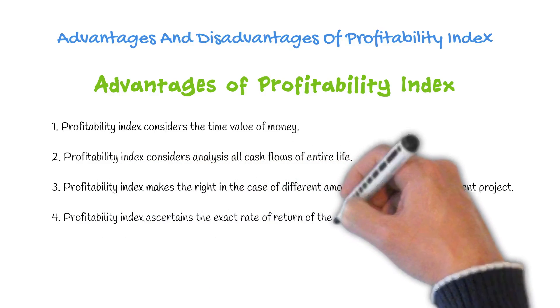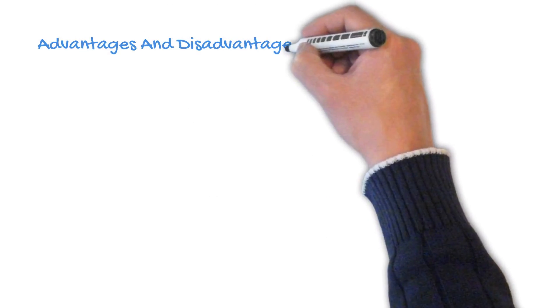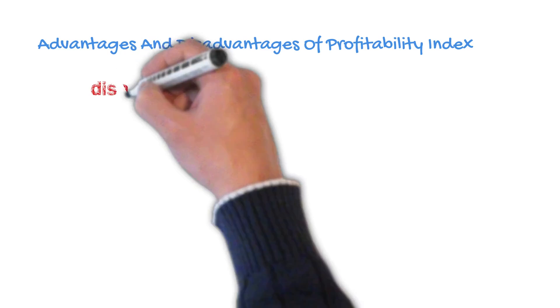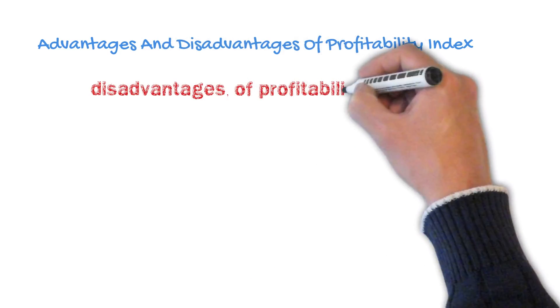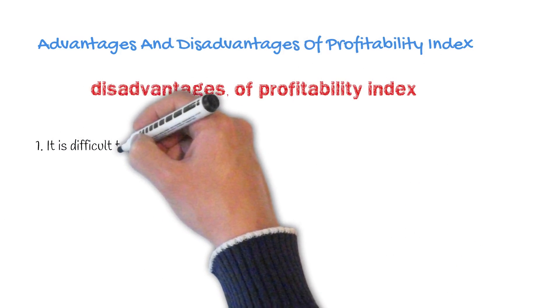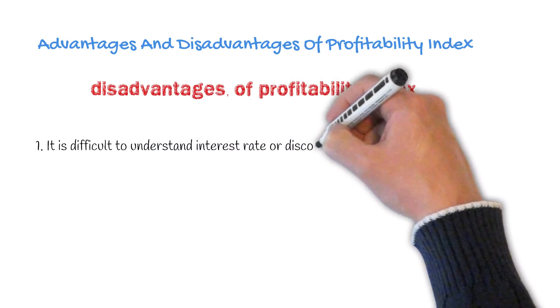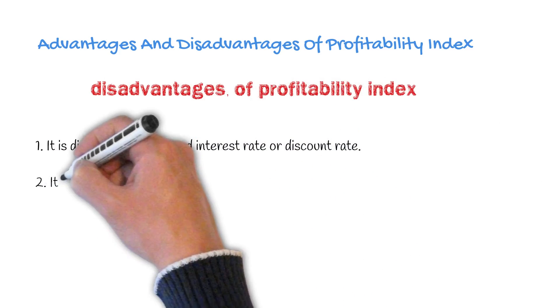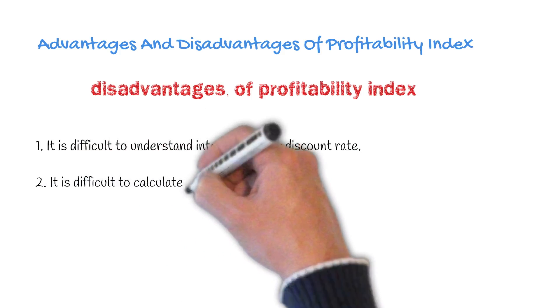Now let's discuss the disadvantages of Profitability Index. First, it is difficult to understand the interest rate or discount rate. Second, it is difficult to calculate the Profitability Index if two projects have different useful lives.